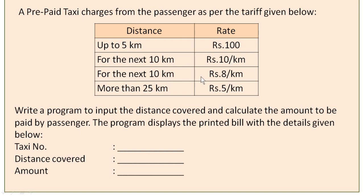The next 10 km is Rs. 8 per km. Again the same process — you have to subtract 15 km from the current distance, then multiply the remaining distance by 8, and add up the previous two values. That is: first 5 km is Rs. 100, next 10 km is also Rs. 100, so Rs. 200 will be added.